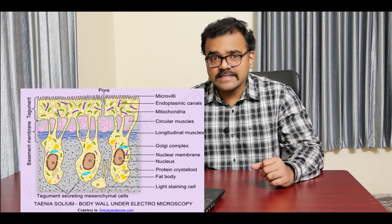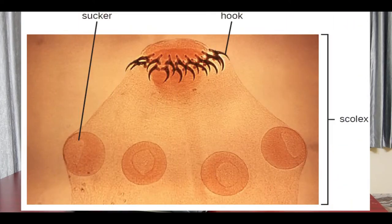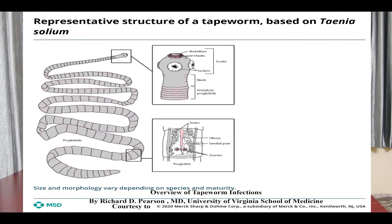The tegument serves the functions of protection, absorption, excretion, and gaseous exchange. The scolex has four suckers. The cestodes, being endoparasites, do not possess a digestive system or sense organs.